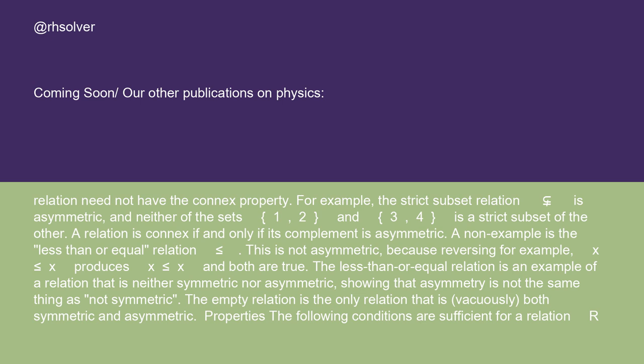A non-example is the less-than-or-equal relation (≤). This is not asymmetric because, for example, x ≤ x produces x ≤ x, and both are true. The less-than-or-equal relation is an example of a relation that is neither symmetric nor asymmetric, showing that asymmetry is not the same thing as not symmetric. The empty relation is the only relation that is vacuously both symmetric and asymmetric.